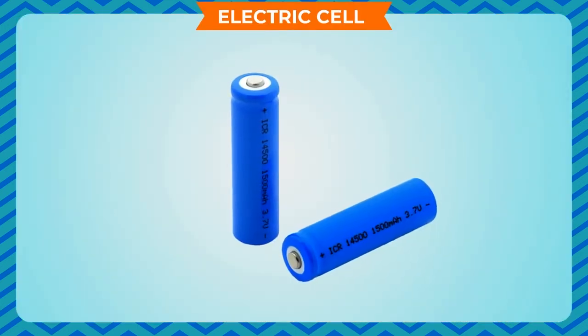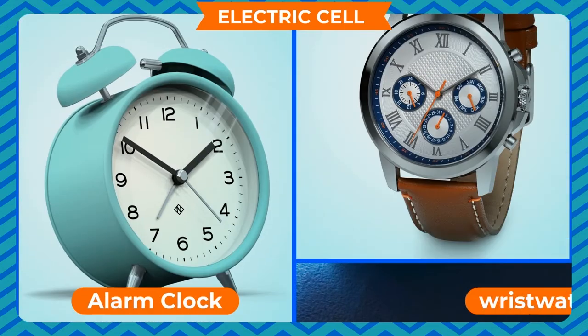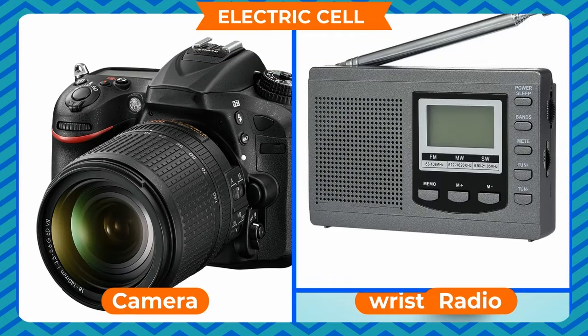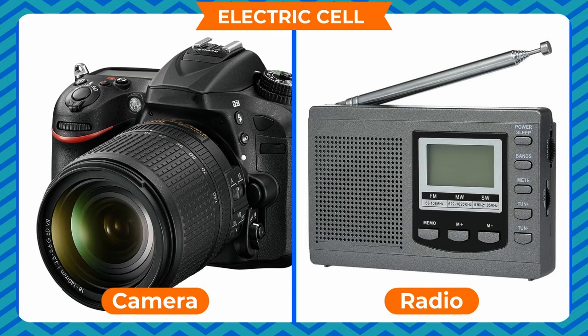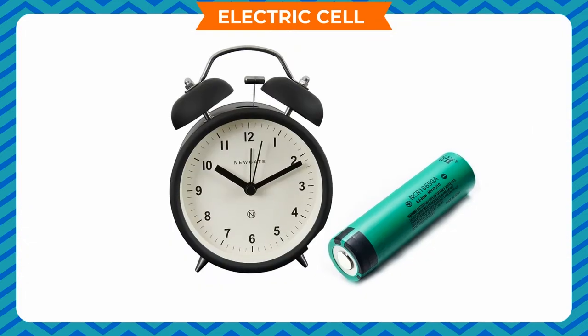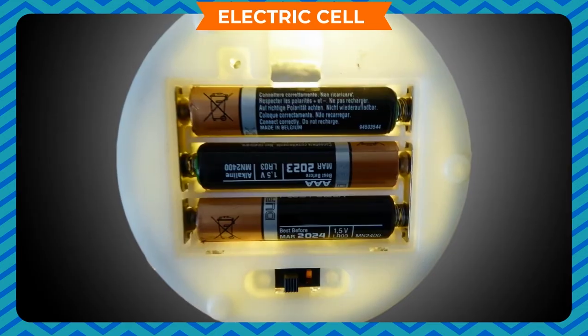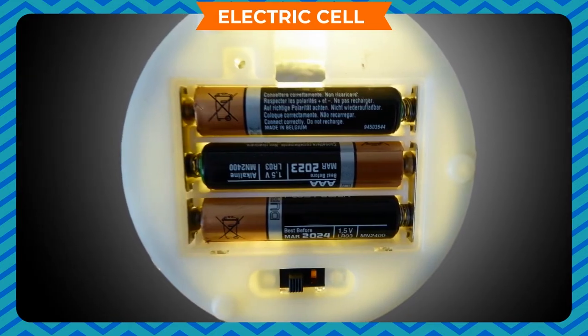Electric Cell. Ever thought how does a bulb in a torch, alarm clock, wrist watch, camera, radio, and many other devices work? From where do all these devices get energy? You might have observed that a small electric cell is placed in these devices that supplies electrical energy.